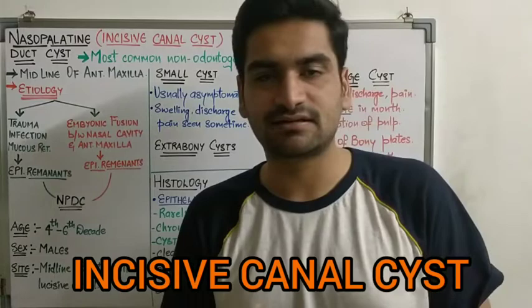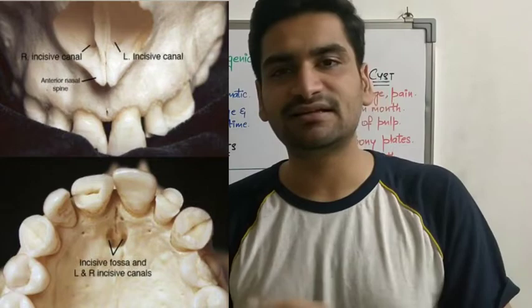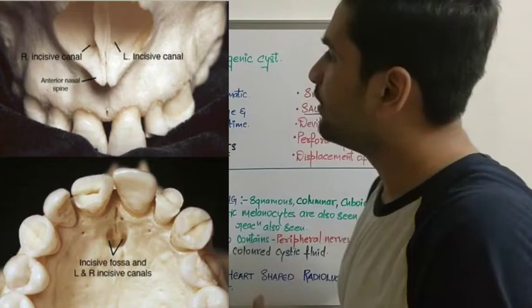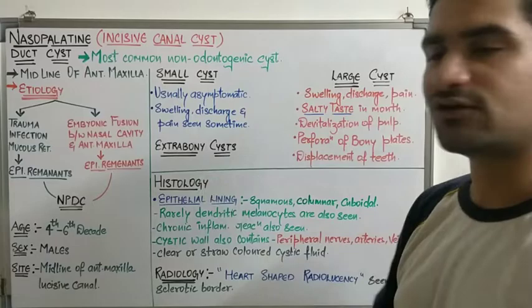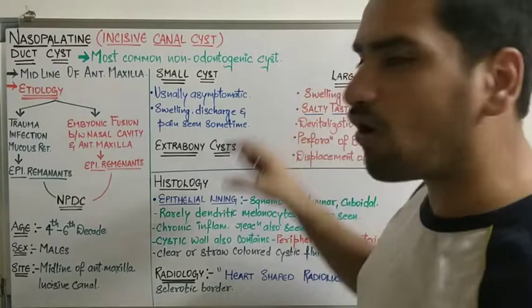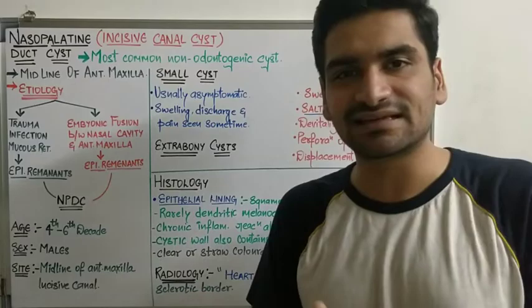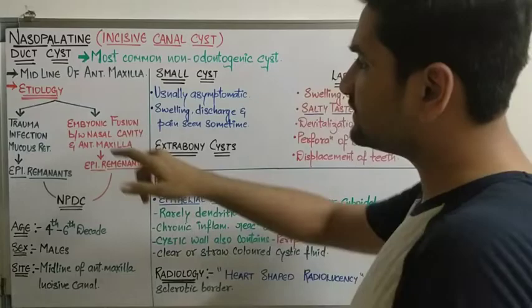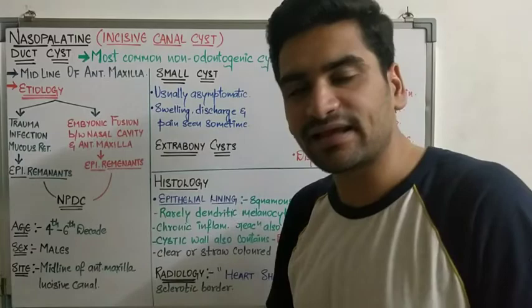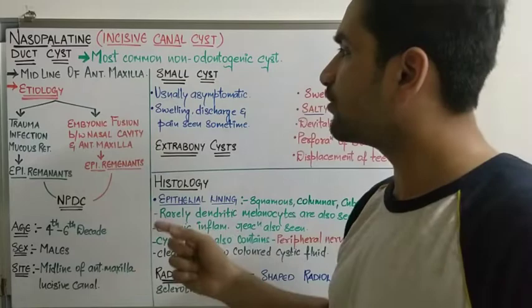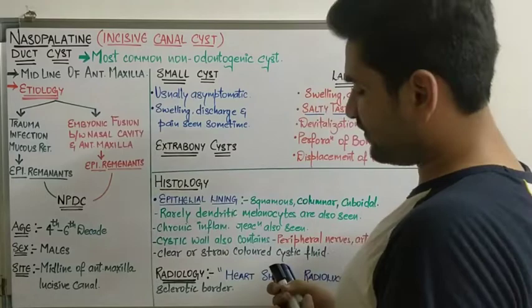It is also called the nasopalatine canal cyst or incisive canal cyst. The incisive canal is present just beneath the two central incisors in the midline, in the incisive papilla. The nasopalatine duct cyst is related to that nasopalatine or incisive canal and is the most common non-odontogenic cyst. It occurs in the midline of the anterior maxilla.